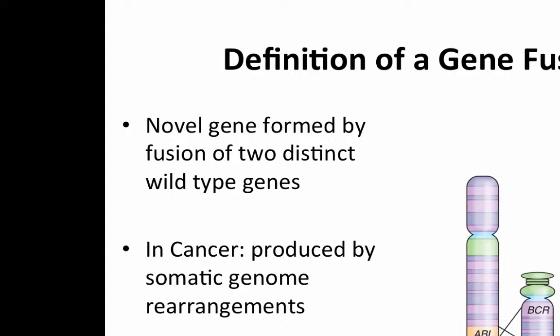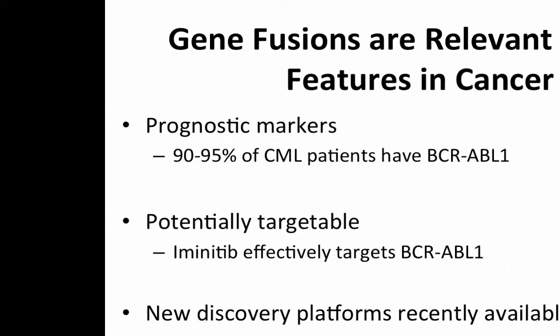We'll define a gene fusion as a novel gene formed by a fusion of two distinct wild-type genes. In cancer, these are produced by genomic rearrangements. The canonical example is the BCR-ABL fusion that defines chronic myelogenous leukemia. This was basically the first somatic change linked to cancer, identified some 40 or 50 years ago, and it's also one of the success stories because we have drugs that target it.